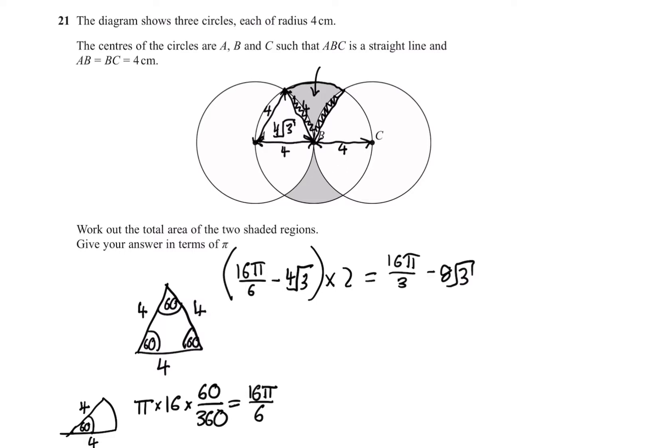Now, we just need to find this sector, which also has side lengths of four and an angle of 60. And then we subtract them to find just that gray top half. So we've already found a sector like this, as it's the same as this. So its area is going to be 16 pi over six.